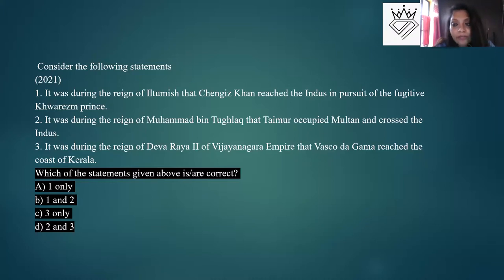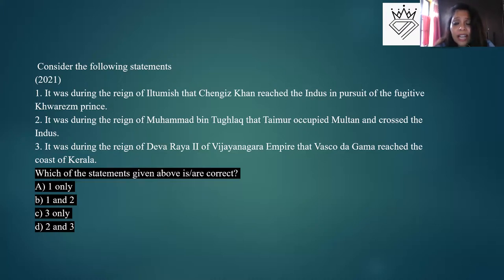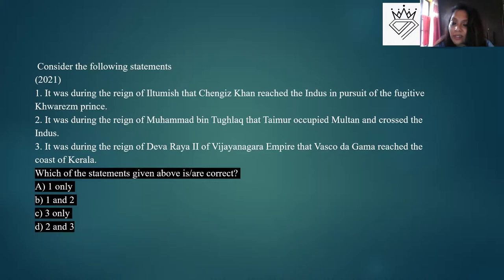Vijayanagara kings were very culturally enriched. Krishnadeva Raya had a court of eight or nine gems including Allasani Peddana and Tenali Ramakrishna. He wrote several books including Amuktamalyada. The Virupaksha temple and other temples were built under these kings who patronized local deities. All of this would be very important — the only way to cover it is to make lists and listicles.